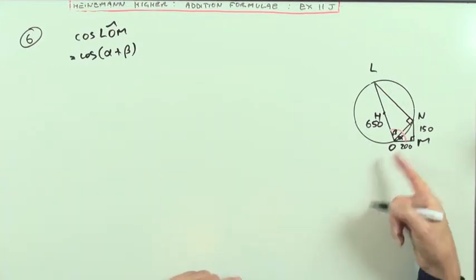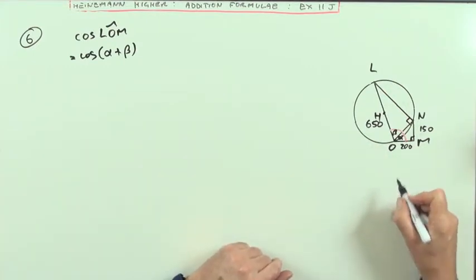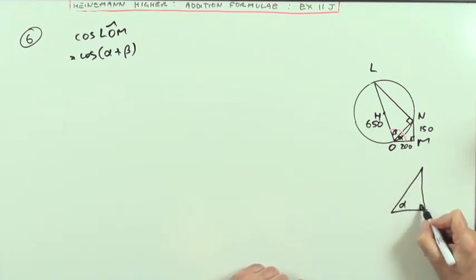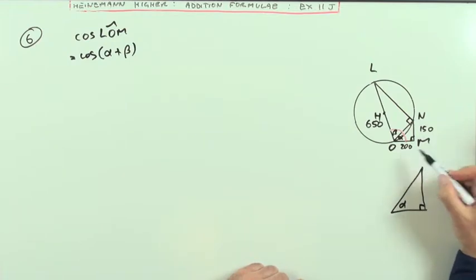And something else that could simplify the arithmetic, because look at the size of those numbers would be this. I'll just pick those triangles out again, so I've got the triangle that includes alpha, which is 150 and 200.